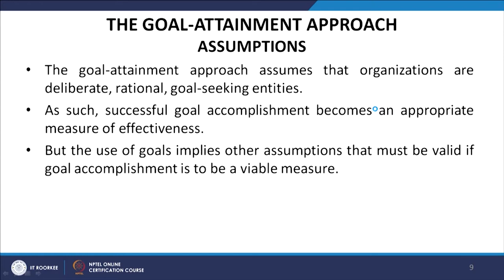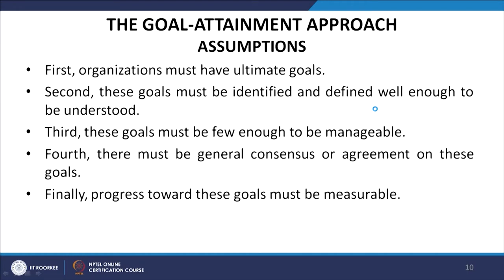The goal attainment approach assumes that organizations are deliberate, rational, and goal-seeking entities. Successful goal accomplishment becomes an important measure of effectiveness. The assumptions are: first, organizations have ultimate goals; second, these goals can be identified and defined well enough to be understood; third, these goals must be few enough to be manageable; fourth, there must be general consensus on these goals; and finally, progress towards these goals must be measurable.